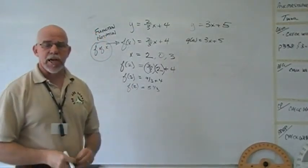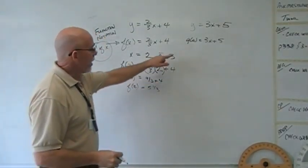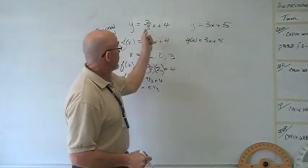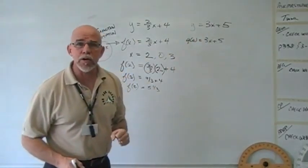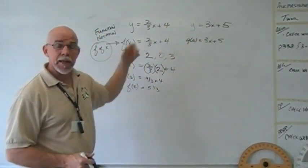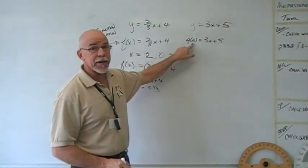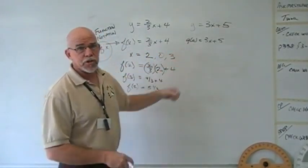Function notation allows us to have multiple different functions and not be confused which function we're talking about. If they're both written in y equal, that's a little confusing. Hey, go to the y equal from, well, there's two. Which one are you talking about? But I can say go to the f function, and it's pretty clear that the f function is identified by name as different than the g function.